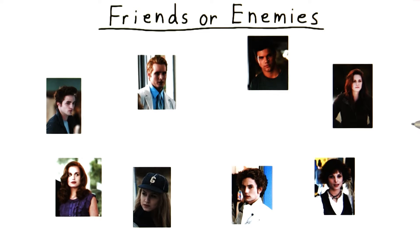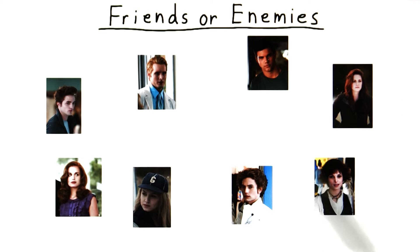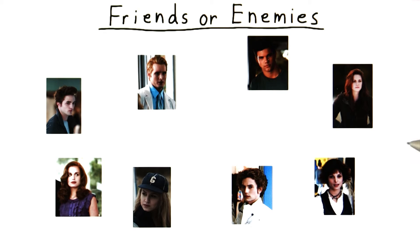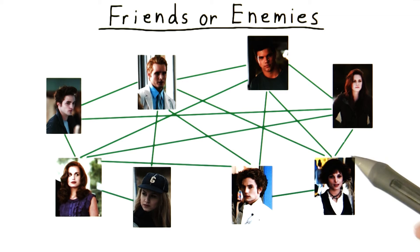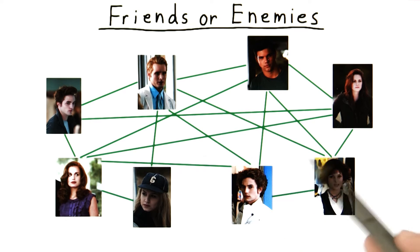We'll illustrate the distinction between P and NP by trying to analyze a world of friends and enemies. By the way, Lance gets credit for this example — his daughters were the right age for the Twilight movie when it came out. Everyone in this world is either a friend or an enemy, and we'll represent this by drawing an edge between all the friends, like so.